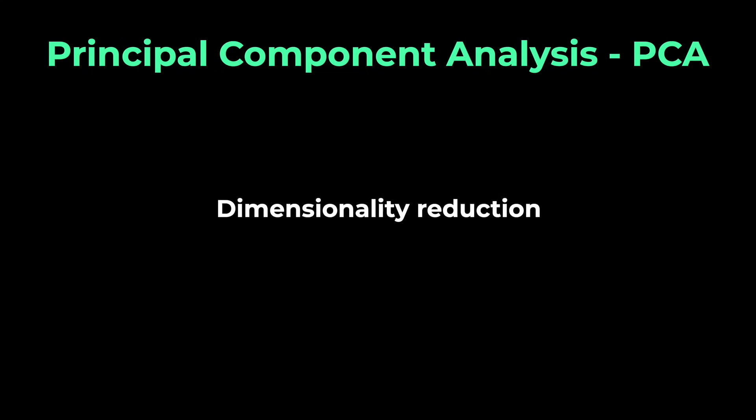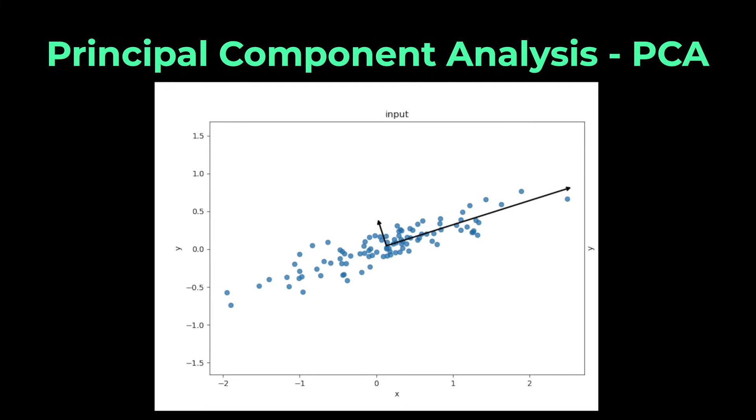PCA is commonly used for dimensionality reduction. It computes the so-called principal components and then transforms the data by projecting all data points onto these new axes. In this simple example we end up from a 2D space in a one-dimensional space on the line but of course this can be used for any number of dimensions.